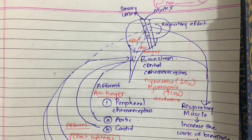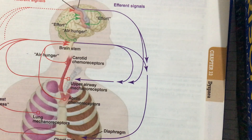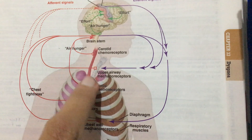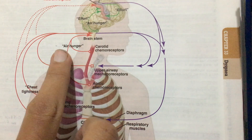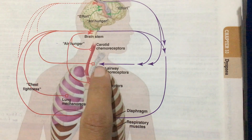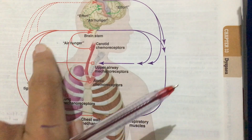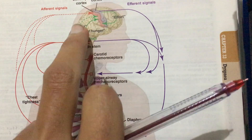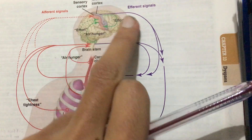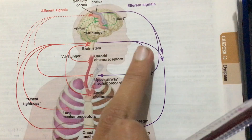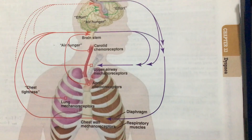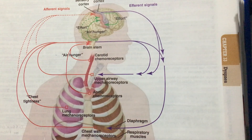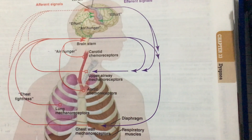To summarize, the afferent signals are carried by the carotid and aortic chemoreceptors, causing air hunger to the brainstem. The upper airway, lung, and chest wall mechanoreceptors take afferent signals to the brainstem and sensory cortex. The motor cortex responds with efferent signals passing to the sensory cortex, brainstem, and respiratory muscles. When there is a mismatch in these efferent and afferent systems, dyspnea results.